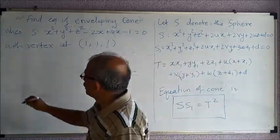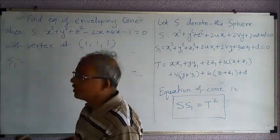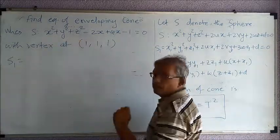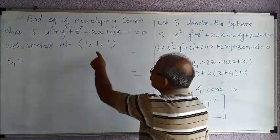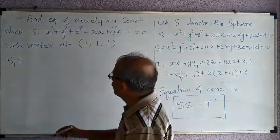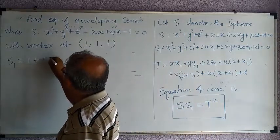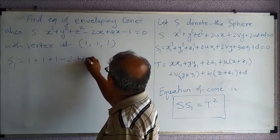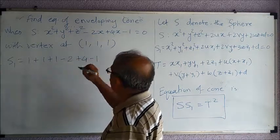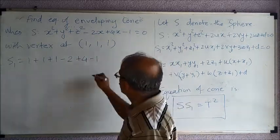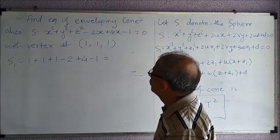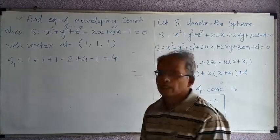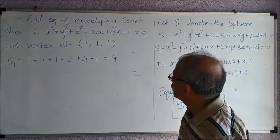Now we generate S1. Substituting (1, 1, 1) into S: 1 + 1 + 1 − 2 + 4 − 1 = 4. So S1 = 4.